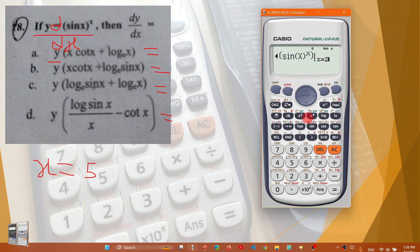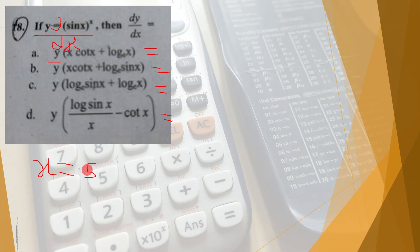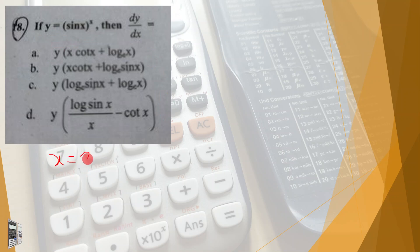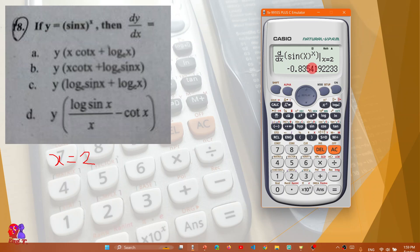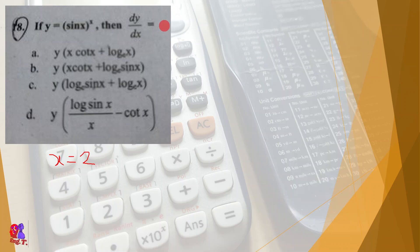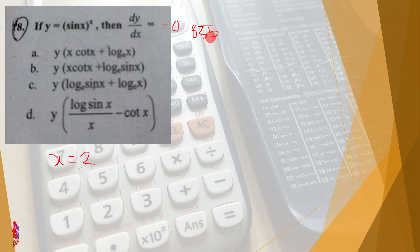X is equal to 2. I will calculate the value of X = 2, and with X the value is equal to 2. I will calculate the value: the result is minus 0.835.